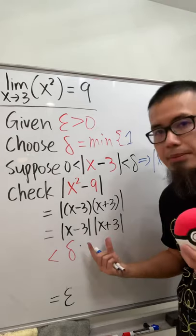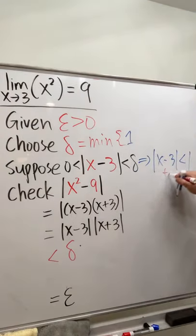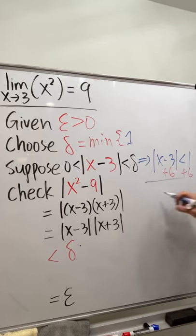But you see this right here, we want to end up with the absolute value of x plus 3, right? So just go ahead and add 6 on both sides, don't worry, this is okay. And you get the absolute value of x plus 3 is less than 7.